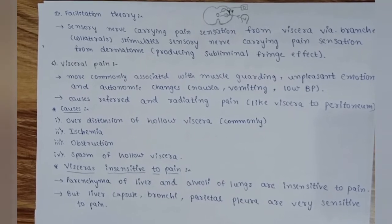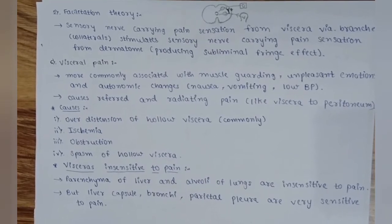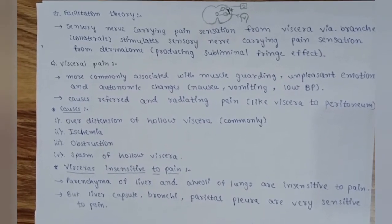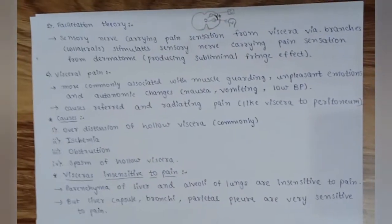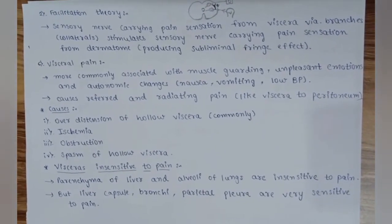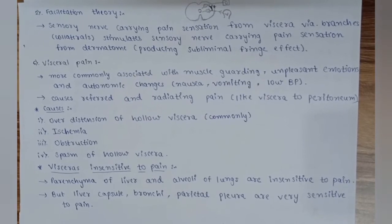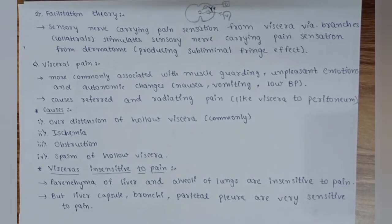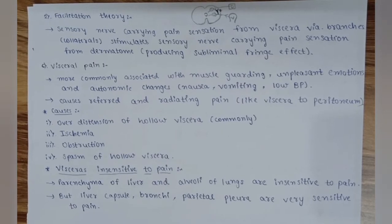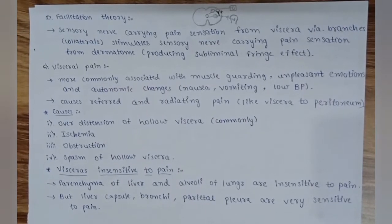The third type is visceral pain, commonly treated with muscle guarding, unpleasant emotions, and autonomic changes like nausea, vomiting, and low BP. Muscle guarding means a person treats a particular injured area with more than necessary care. Visceral pain causes referred and radiating pain. Causes for visceral pain include: overdistension of hollow viscera (most common), ischemia, obstruction, and spasm of hollow viscera. Viscera like liver and alveoli are insensitive to pain, but the liver capsule, bronchi, and parietal pleura are very sensitive.